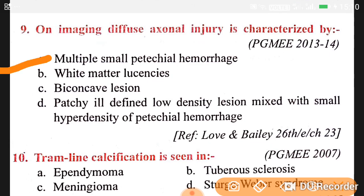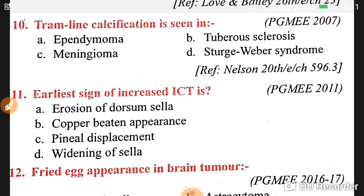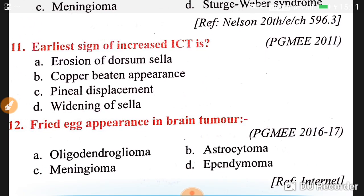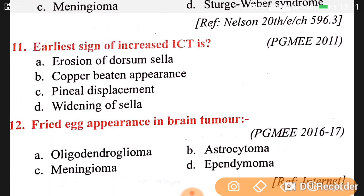Question number ten: tram line calcification is seen in Sturge-Weber syndrome. Question number eleven: the earliest sign of increased intracranial tension is erosion of the dorsal sella.